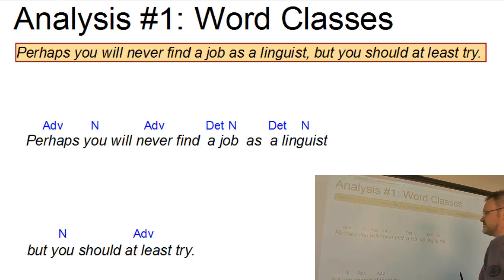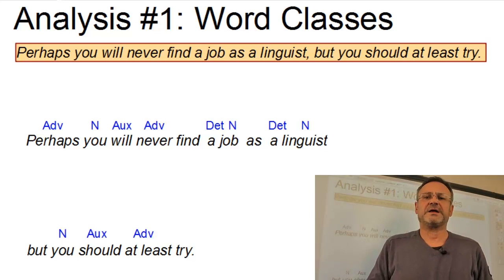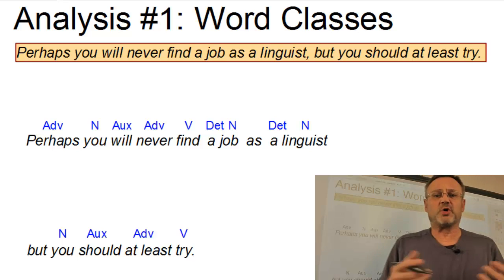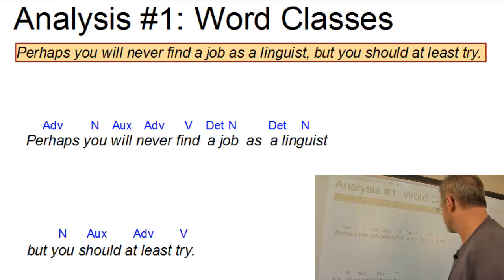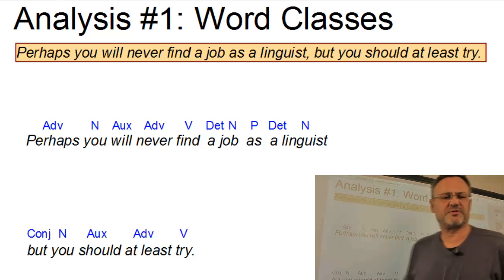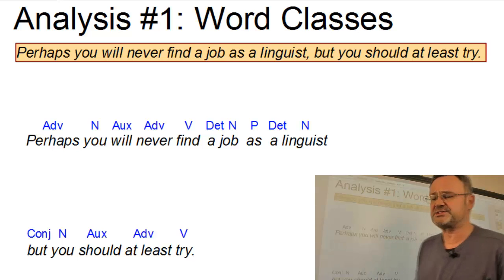And we have auxiliary verbs. In our case, the auxiliary verbs will and should, which are both modal verbs. Last but not least, try and find are verbs, so called lexical verbs. Well, and the remaining elements are as, which can be analyzed as a preposition here, and but, which is of course a conjunction. So much for a simple categorical analysis.